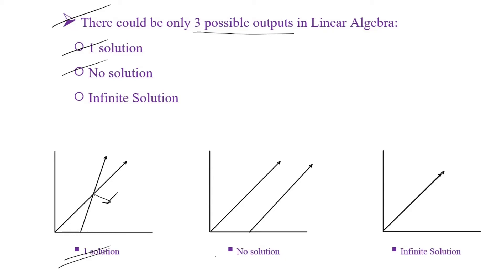The second could be no solution. Imagine you and your friend starting from two different points but with the same speed — in that case, no matter how long you travel, you will never cross paths. The third is an infinite number of solutions: if you and your friend start from the same point and share the same speed, then at each and every single point you are crossing paths, giving infinite solutions.